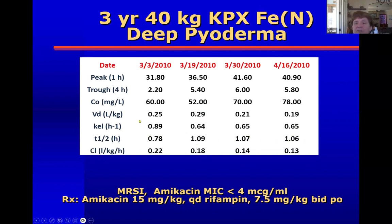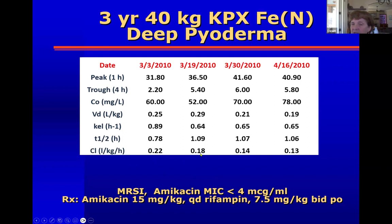The half-life stayed relatively stable in part because his volume of distribution contracted — I can't fully explain why — so his half-life became shorter. But look at what happened to his clearance: his clearance for the aminoglycoside actually decreased, which caused his half-life to stay about the same. When I saw this, I warned him at the second time point that clearance was getting a little less. By the next week it was even a little bit less, and I said we need to think about stopping.